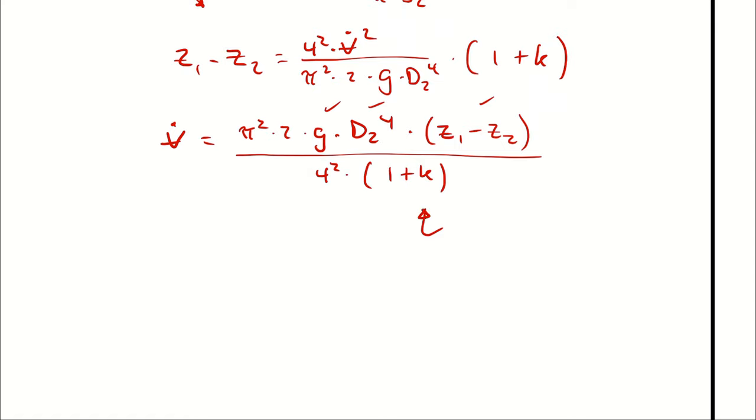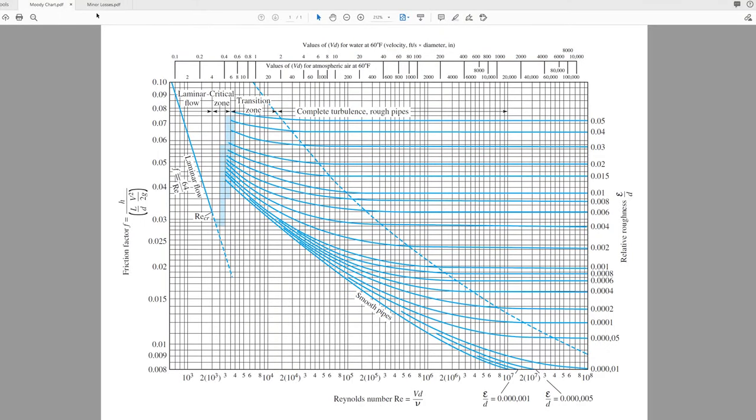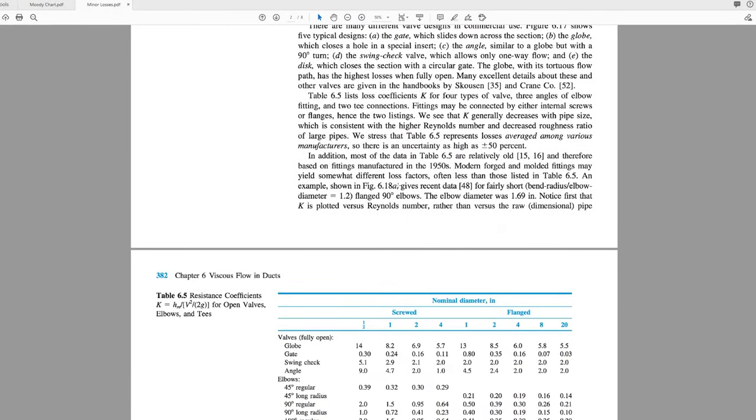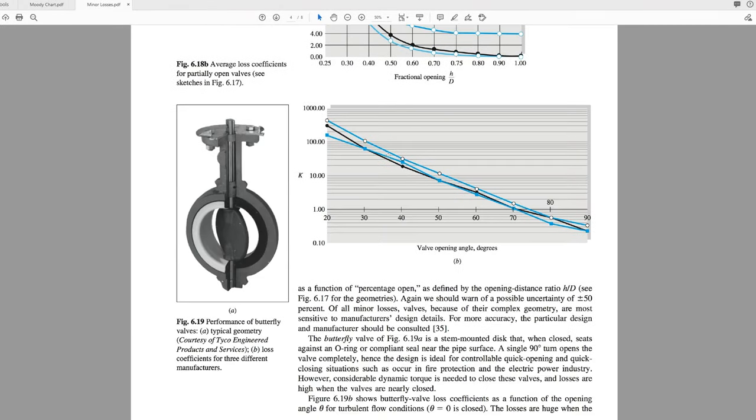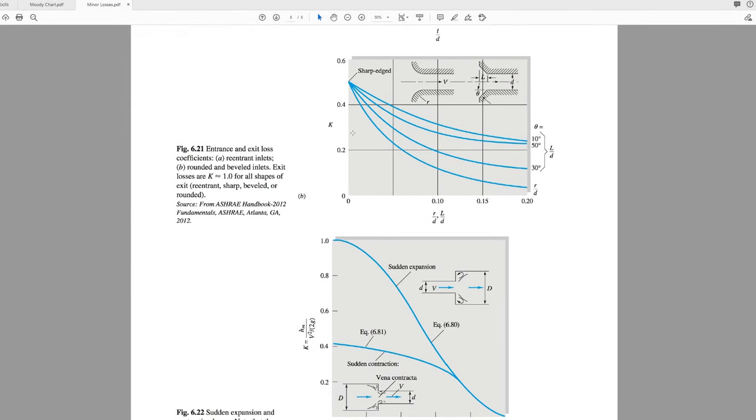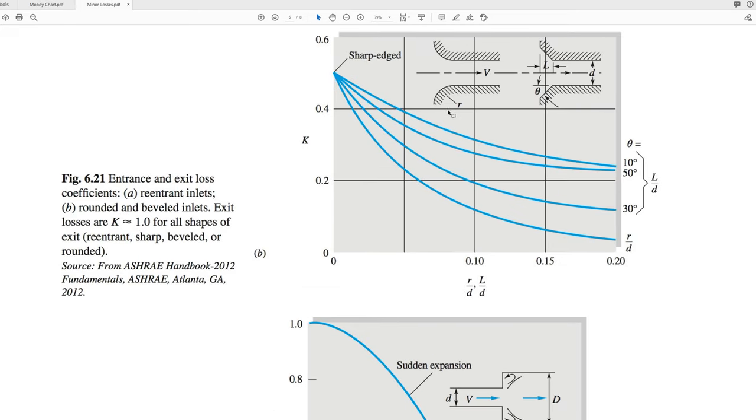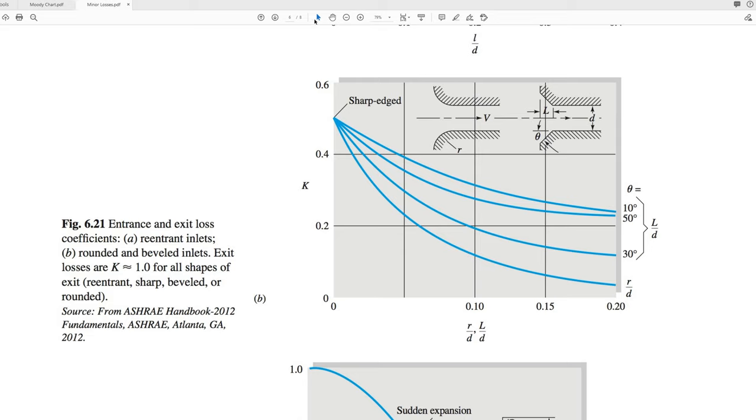To determine that k value, I'm going to go to section 6.9 of my textbook. And I will look around for minor losses that are relevant to this entrance. Note again that that's a rounded entrance to a pipe. For entrances, I'm going to be using 6.21. On 6.21, specifically 6.21b, I can see that for a rounded inlet, I'm going to have a loss coefficient that is a function of the proportion of the radius over the diameter. On figure 6.21b, I can see that for a rounded inlet, I'm going to have a loss coefficient that is a function of the bend radius over the diameter of the pipe.